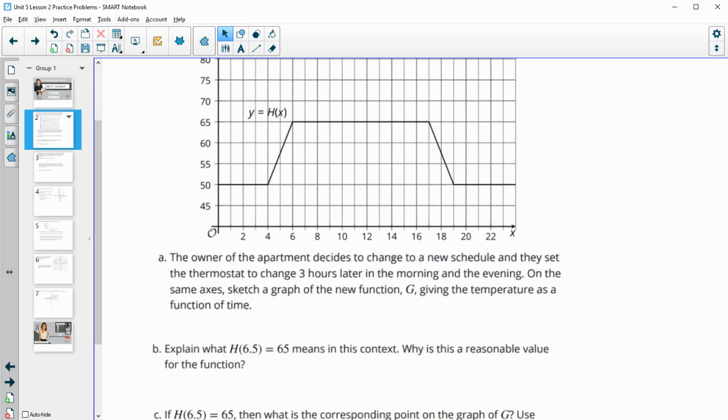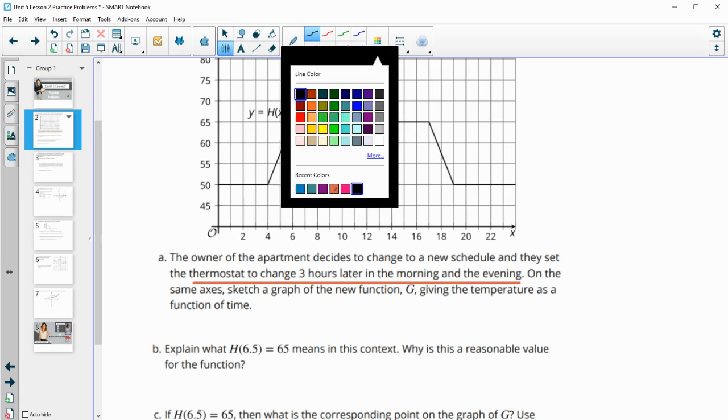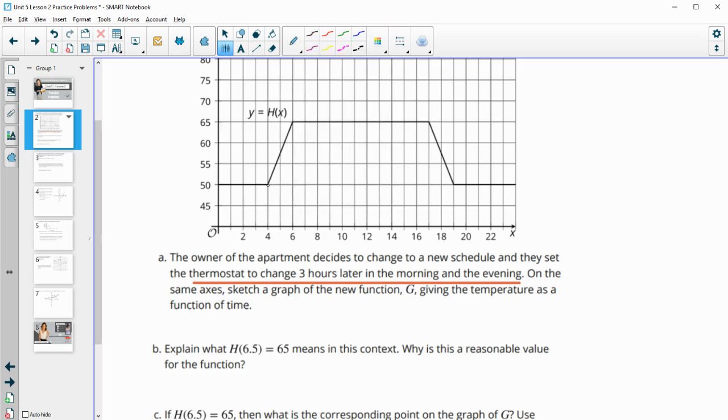So the owner of the apartment decides to change to a new schedule, and they decide to set the thermostat to three hours, so change it to three hours later in the morning and evening. So on the same axis, let's sketch the graph of this new function. So they decide to move this up three hours. So instead of setting it to, or sorry, to move it later.